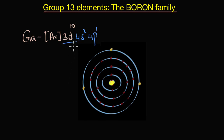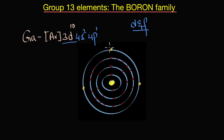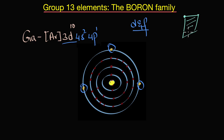Gallium is the first element in group 13 that has completely filled 3d electrons. Because d and f electrons have poor shielding effect, they cannot screen or shield the outer electrons effectively from the nucleus.